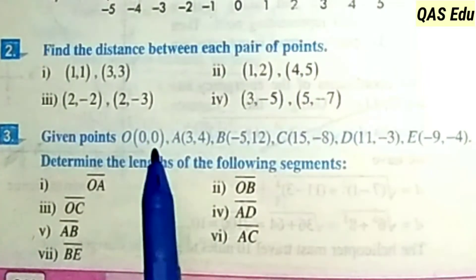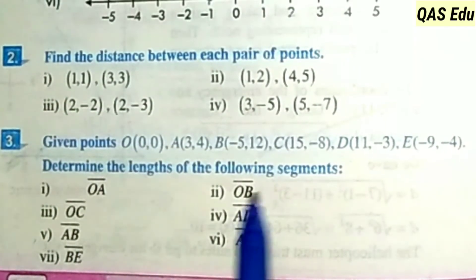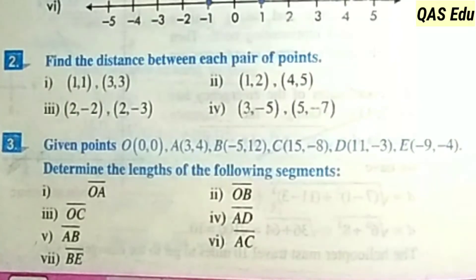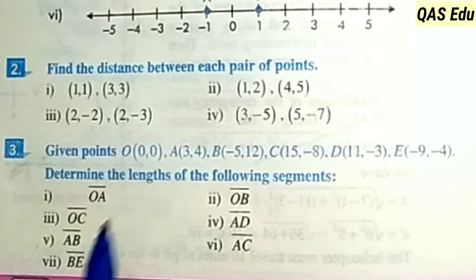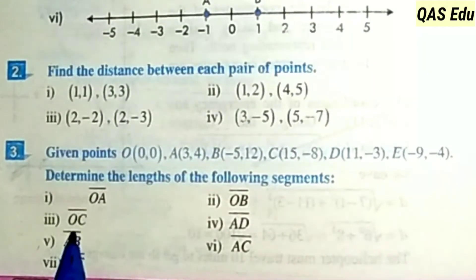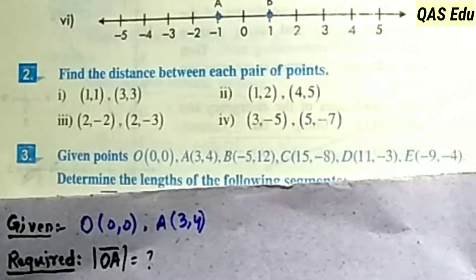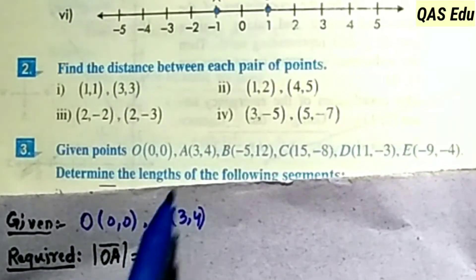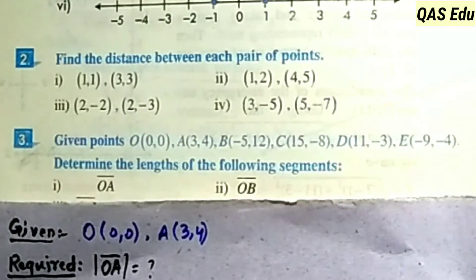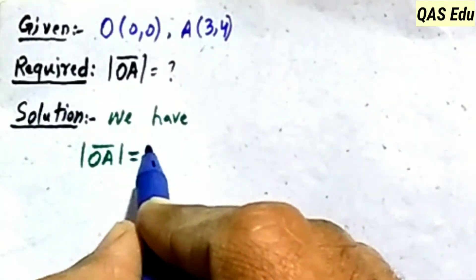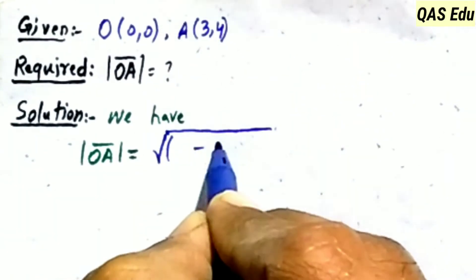Question number 3: points O, A, B, C, D, E — determine the length of the following segments: OA, OB, OC, AD, AB, AC, OB, BE. Given: O coordinates are (0, 0), A coordinates are (3, 4). Required: OA length. OA is the distance formula: √((x2 - x1)² + (y2 - y1)²).